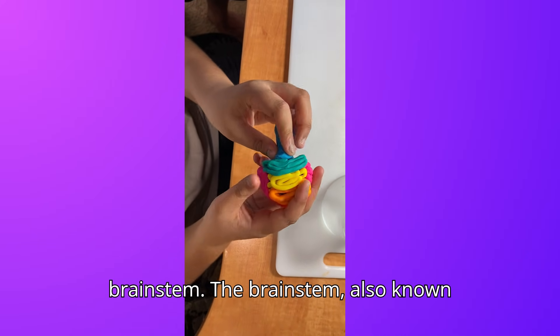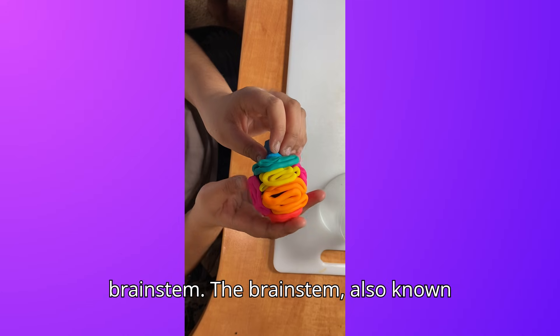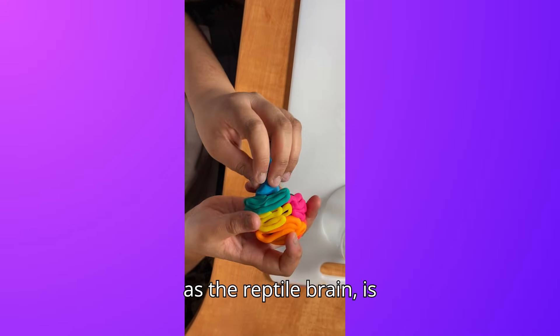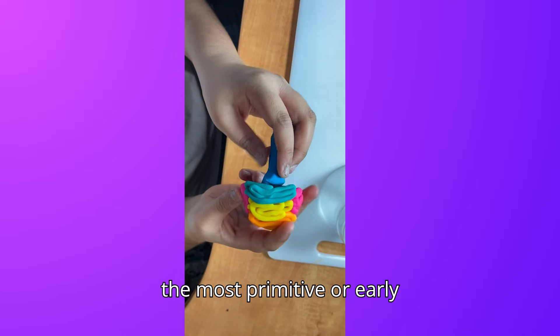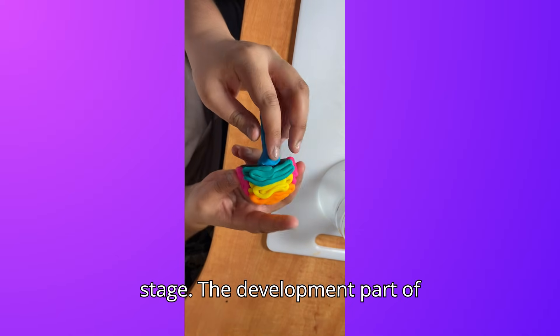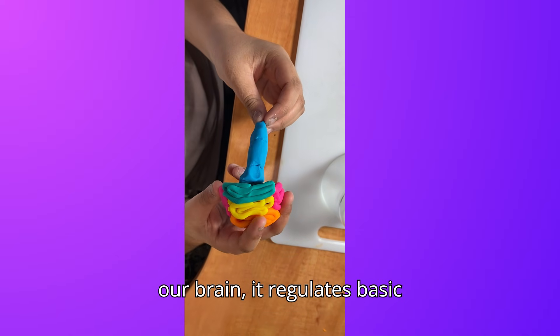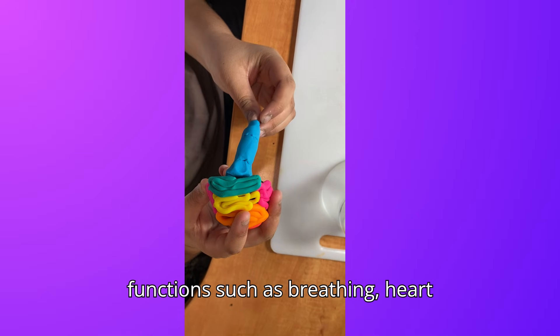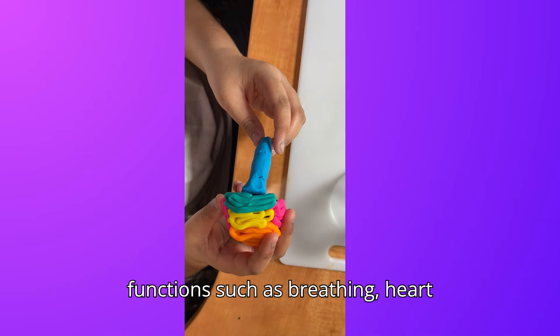Finally, is our brain stem. The brain stem, also known as the reptilian brain, is the most primitive or early stage developing part of our brain. It regulates basic functions such as breathing, heart rate, and blood pressure.